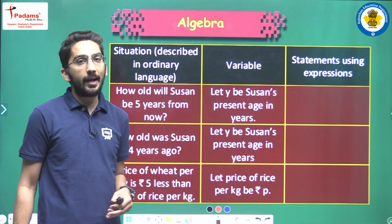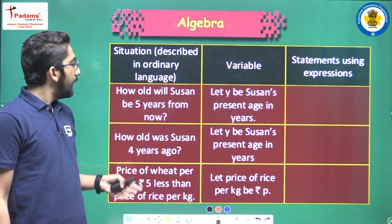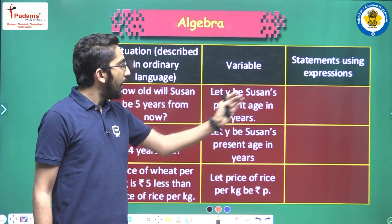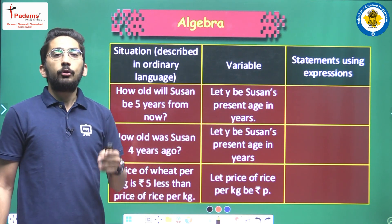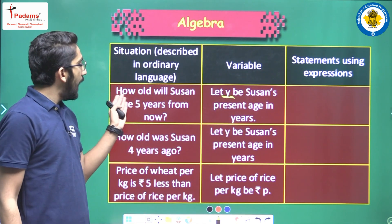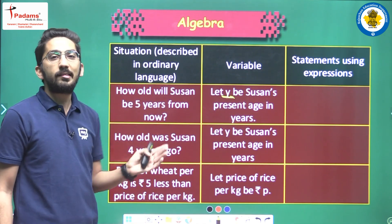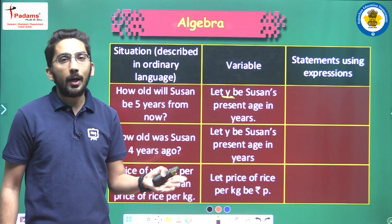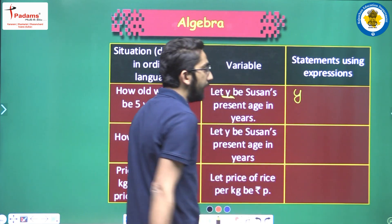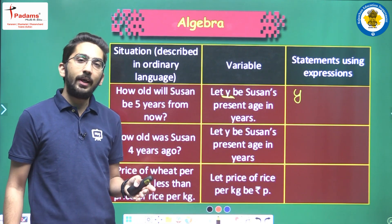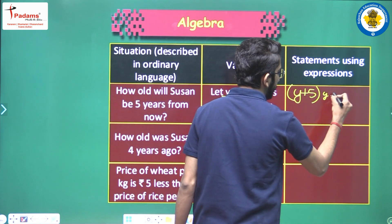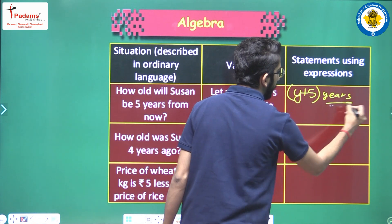Now let's try some examples. First: how old will Susan be five years from now? Let Y be Susan's present age in years. Susan's present age is Y years, and five years from now means five years added to the current age. So if current age is Y years, then five years from now she will be Y plus five years old.